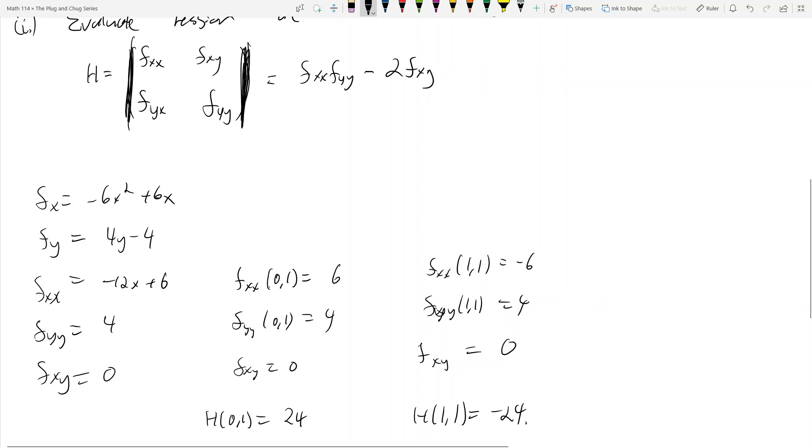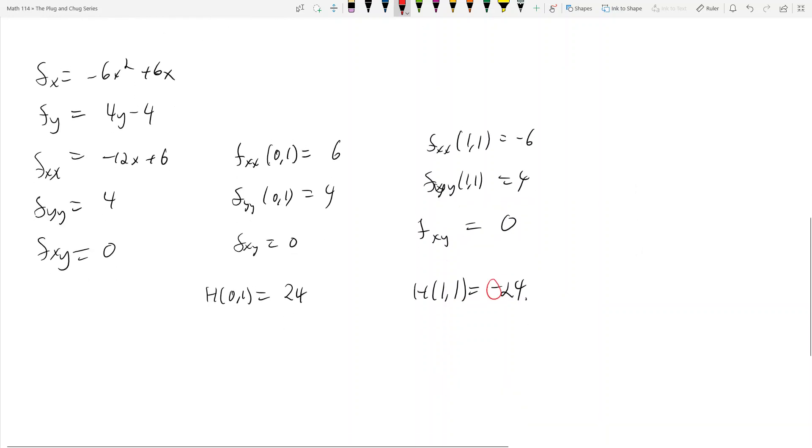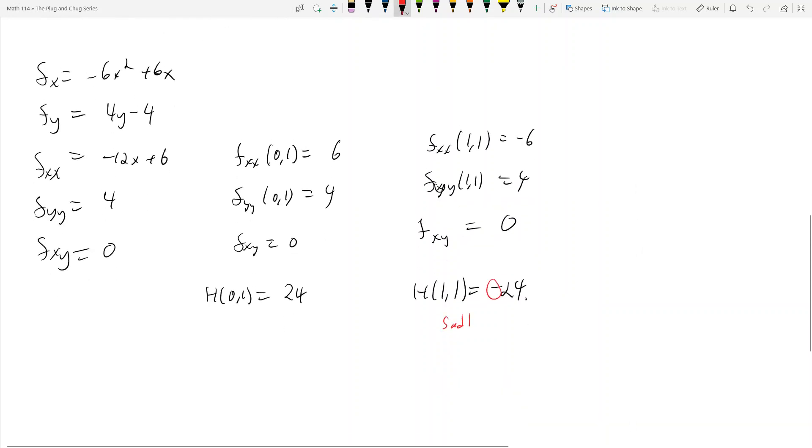Now, since this Hessian is negative, we have a negative sign right there. This automatically tells me that the point at 1, 1 is a saddle point. So Hessian at 1, 1 is a saddle. And the Hessian is negative, that's a saddle point.